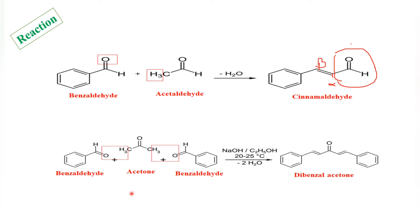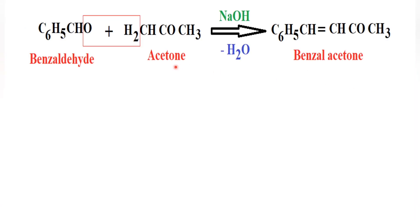If two molecules of benzaldehyde are treated with one acetone — the aliphatic ketone — one molecule of water is removed from each side, and we get dibenzylideneacetone. If only one molecule of benzaldehyde is treated with acetone, we get benzylideneacetone.